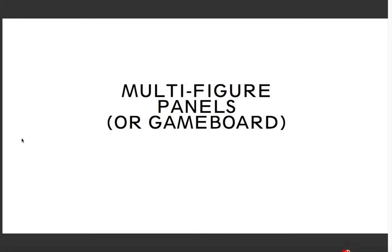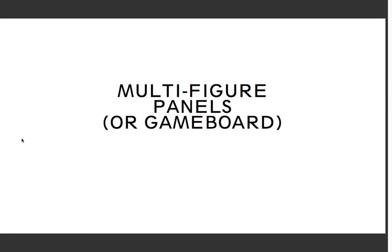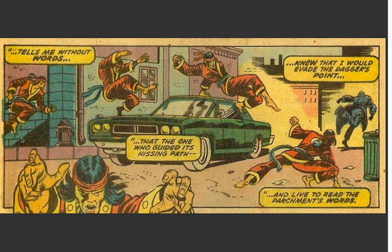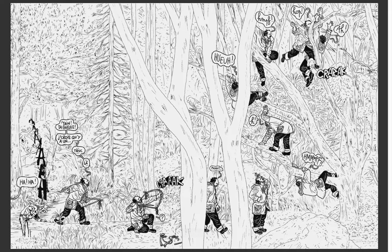Another thing to try or look for is sometimes called multi-figure panels, or what I call a game board. Here from Master of Kung Fu, there are no panel divisions — the character seems to be everywhere at once, which is very exciting. You can see the character moving through the space as he hunts another character, showing his struggle in a way you wouldn't see panel after panel or on a screen. He moves through this landscape like a game board.